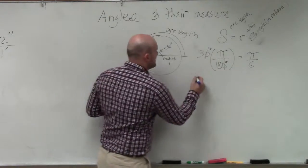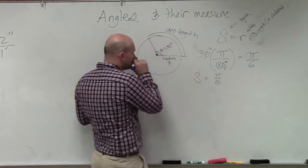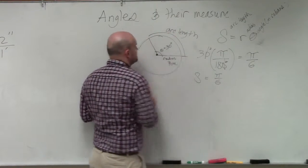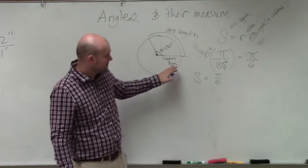Now, to find my arc length, all I'm going to do is multiply pi over 6. Oh, shoot. Let's call this centimeters. I'm sorry. Typically, in these problems, you're going to have a unit of measurement for your radius. OK? My apologies.